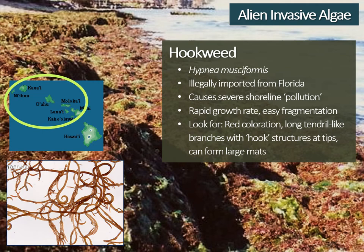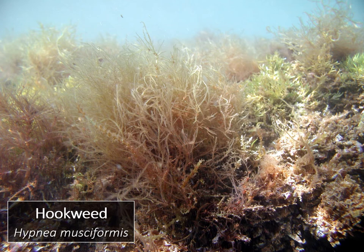Hookweed is an invasive algal species known for its severe degradation of beaches on Maui and Oahu, and is currently established on all Hawaiian islands except Hawaii Island and Kaho'olawe. It was imported illegally from Florida for aquacultural use but was abandoned due to difficulty in processing. Within four years, hookweed spread around Oahu and Maui, where it now forms large, stinky mats that regularly wash up on local beaches — thousands of pounds per week, requiring extensive cleanup. Hookweed prefers calm, shallow reef flats or intertidal areas but can also be found on wave-exposed areas and deeper reefs. It has a light texture and breaks apart easily, allowing for rapid spread.